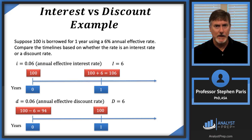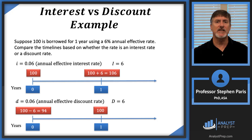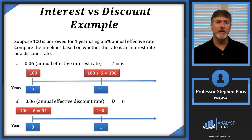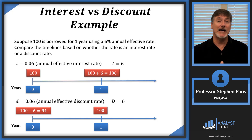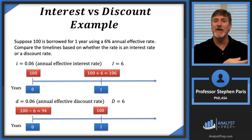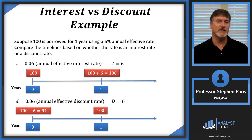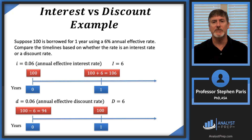Let me point out a couple of things on this slide. The interest amount of $6 in the top timeline is: rate 6% × time 1 year × principal $100 (at the beginning of the period), and the interest is paid back at the end of the period. With the discount rate, the principal $100 shows up at the end of the period at time one — that's what's paid back. And the interest is paid at the beginning of the period. So: interest is paid at end of period based on principal at beginning; discount is paid at beginning of period based on principal at end.